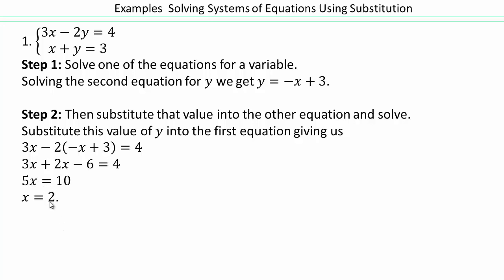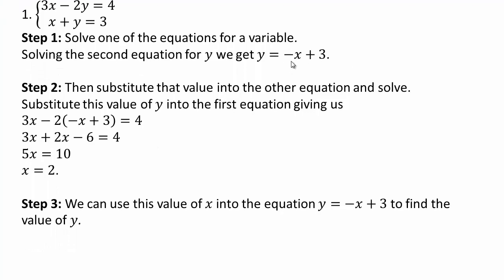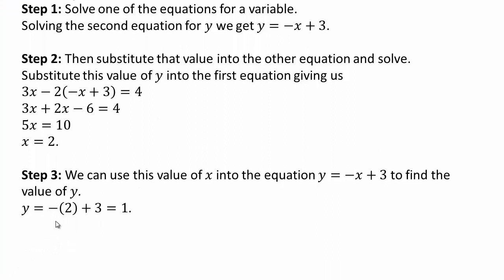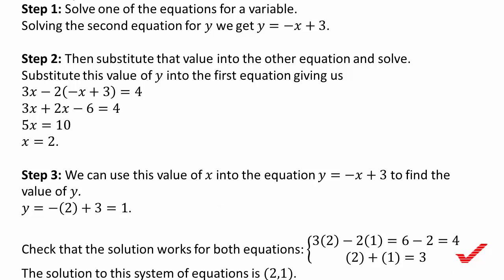Once you find the x value, step 3 is to substitute it back to get the y coordinate. So y equals negative 2 plus 3, which is 1. You can always go back and check that it works in both equations. So our solution is (2, 1), just like we saw in the graph.